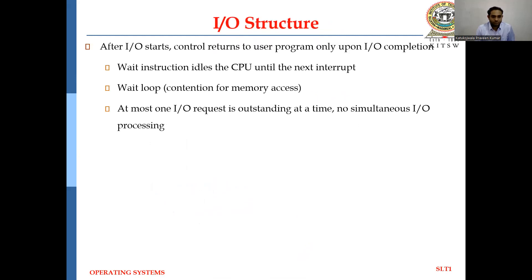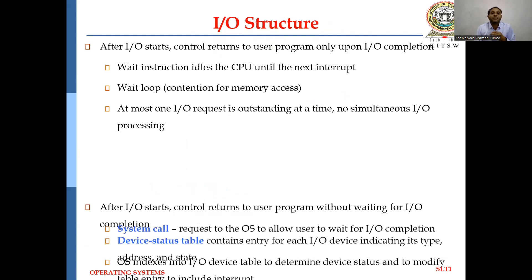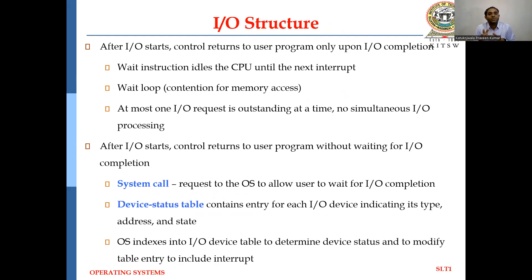I/O Structure: after I/O starts, control returns to the user program only upon I/O completion. A wait instruction keeps the CPU idle until the next interrupt, and at most one I/O request is outstanding at a time — no simultaneous I/Os are processed. After I/O starts, control can also return to the user program without waiting for I/O completion. System calls request the operating system to allow the user to wait for I/O completion. A device status table contains an entry for each I/O device indicating its type, address, and state. The OS indexes into the I/O device table to determine device status and to modify the table entry to include an interrupt.